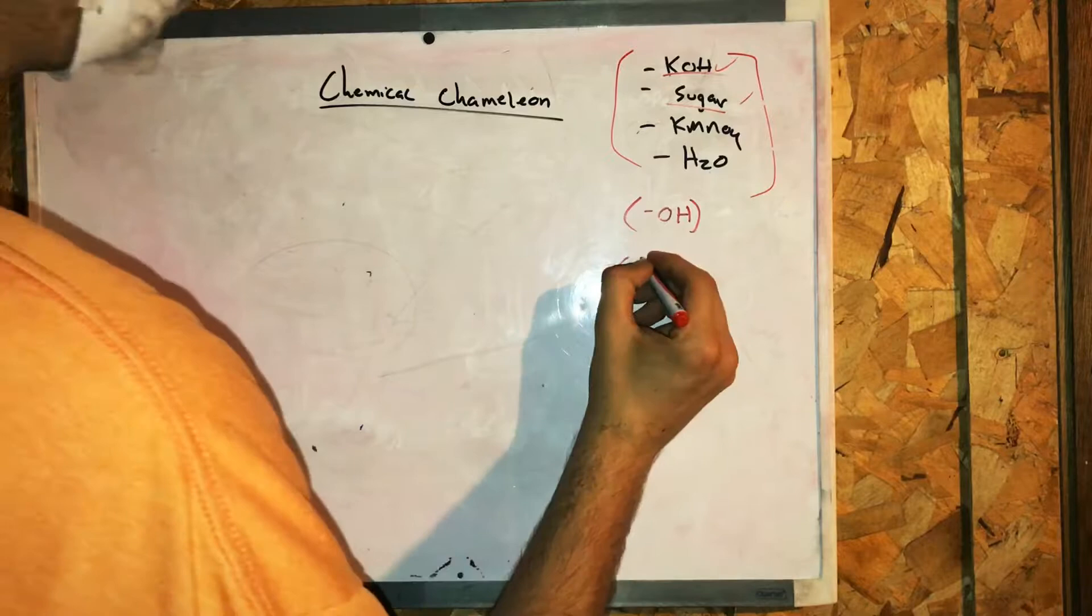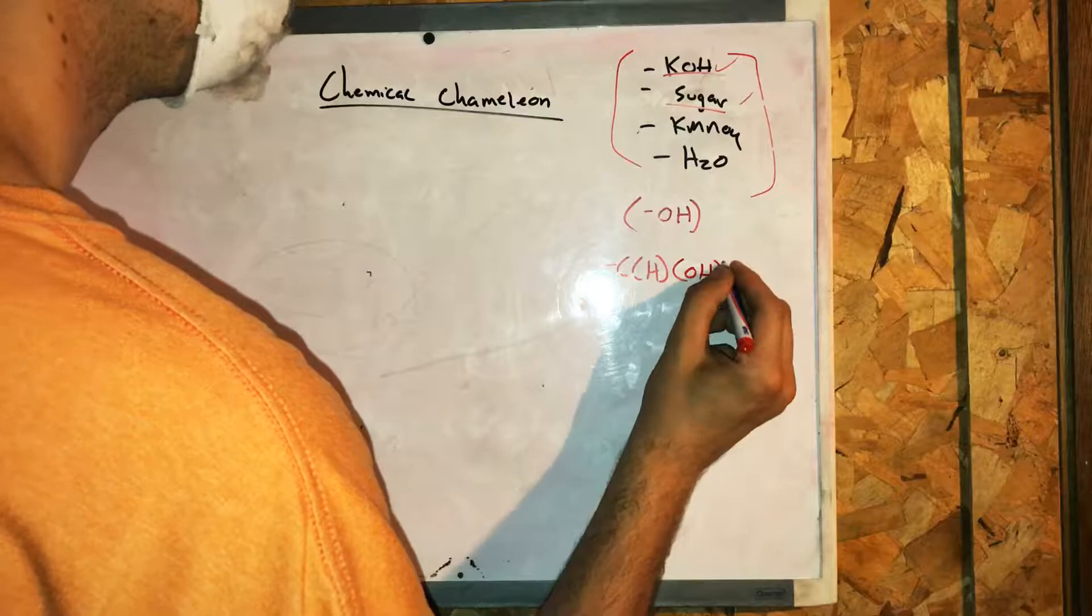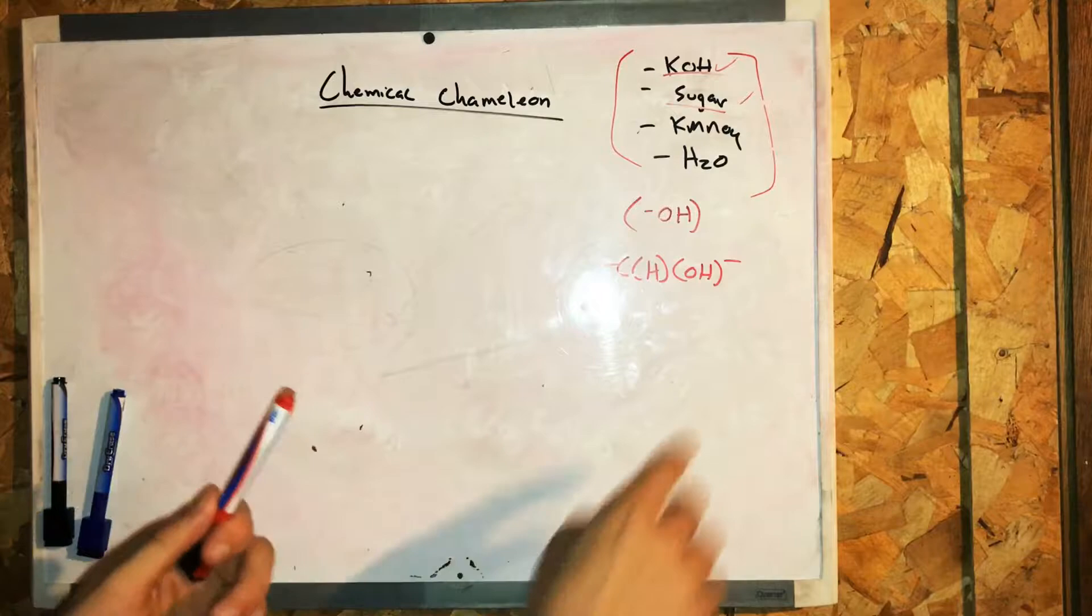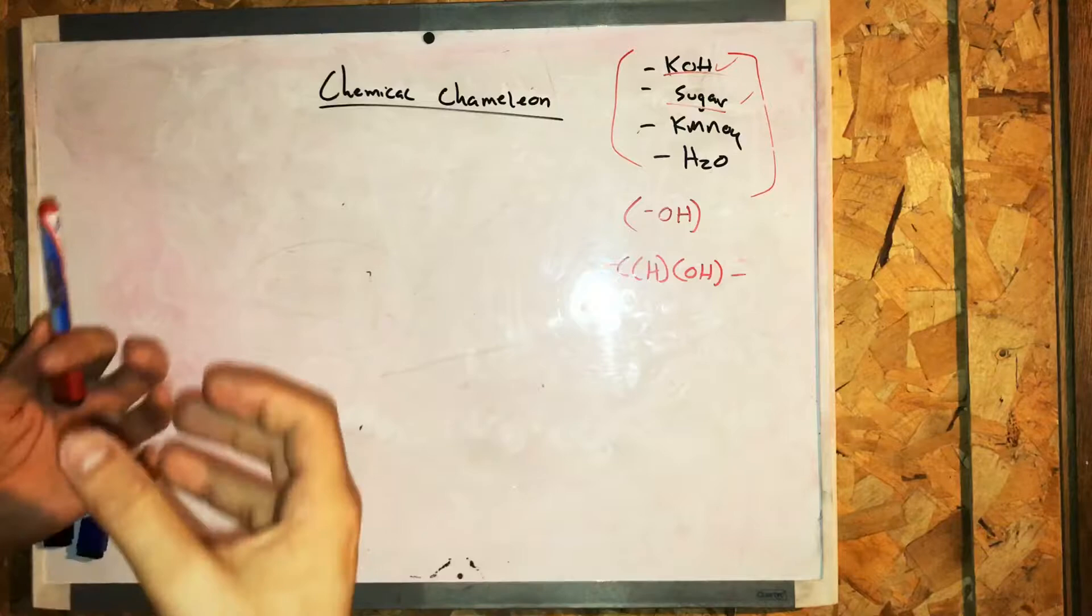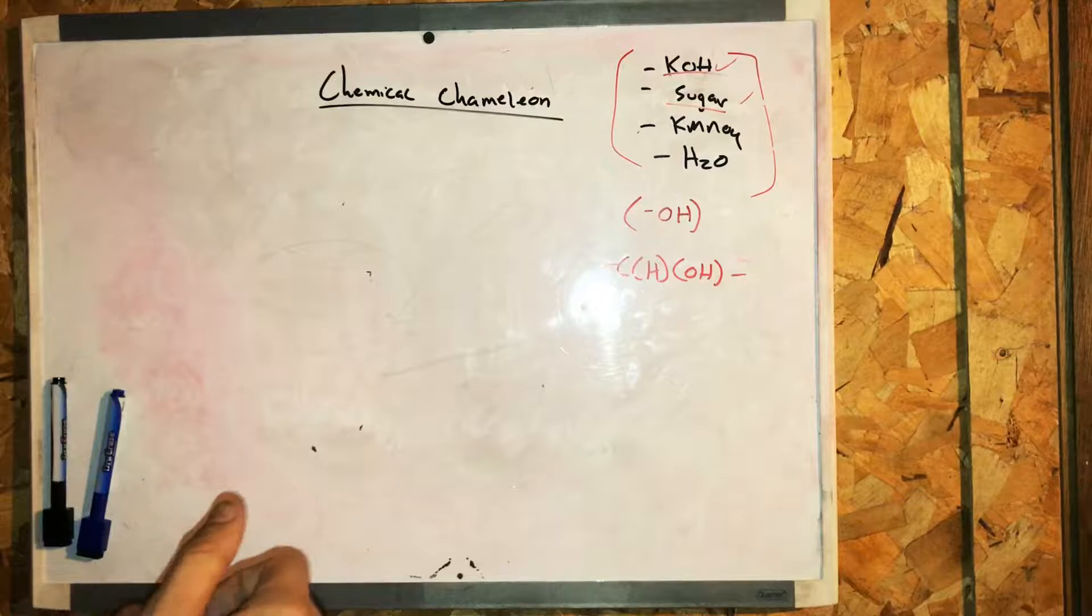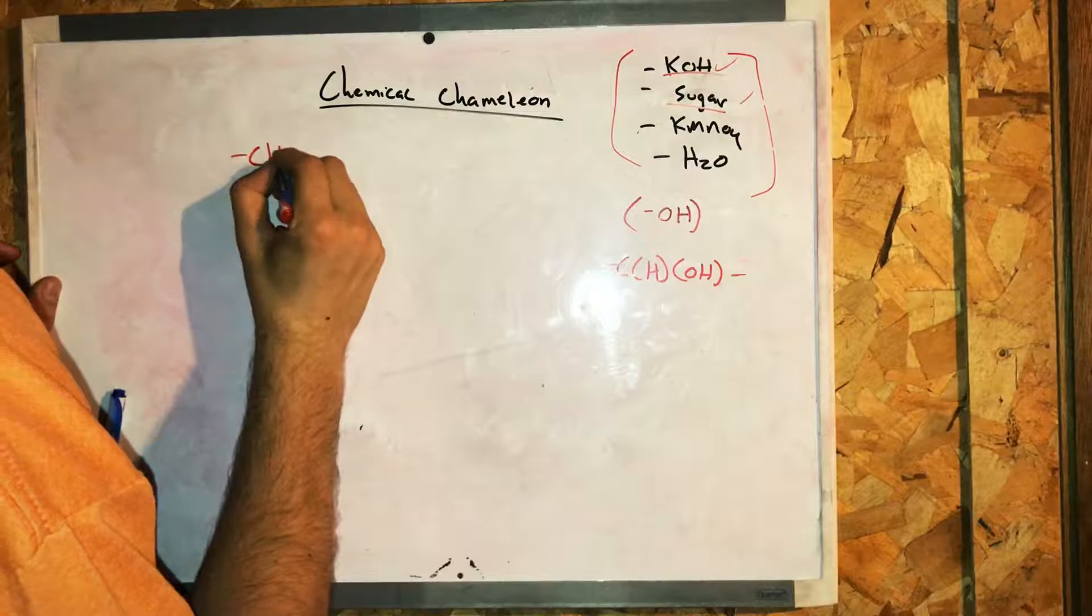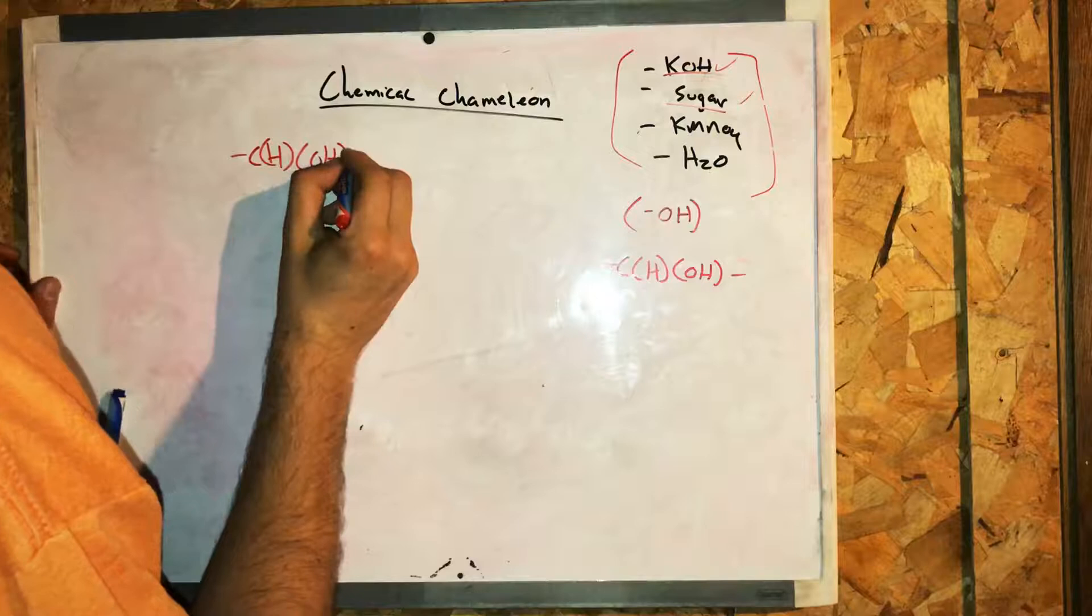The oxidation of this structure is where the alcohol group is oxidized to a ketone group. The equation looks like this: carbon and hydrogen with an OH group, plus 2OH- (hydroxide ion), yields carbon with an oxygen double bond, plus hydrogen...